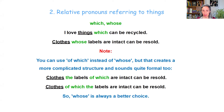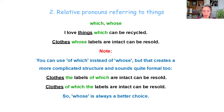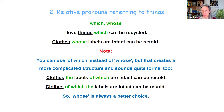The second category is relative pronouns that refer to things, and there are two of those: which and again whose. For example: 'I love things which can be recycled,' and 'clothes whose labels are intact can be resold.' A quick note — you can use 'of which' instead of whose for objects, but that creates a more complicated and formal structure. For example: 'clothes the labels of which are intact can be resold,' or even more formal: 'clothes of which the labels are intact can be resold.' These are usually avoided, and whose is always a better choice. So use whose both for people and for objects.